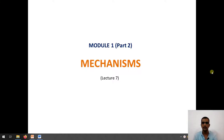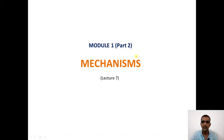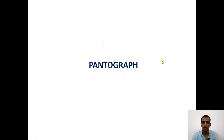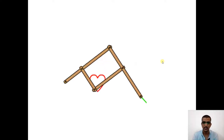Welcome to lecture 7 on mechanisms. In the previous parts we have discussed about the quick return motion mechanisms, straight line motion mechanisms, intermittent mechanisms and the toggle mechanism. So today we will try to start with a new kind of mechanism known as the pantograph. So what exactly is a pantograph and what it does, let us try to understand in this short lecture.